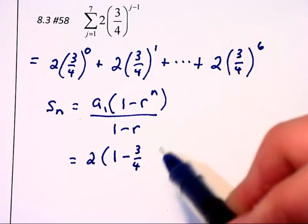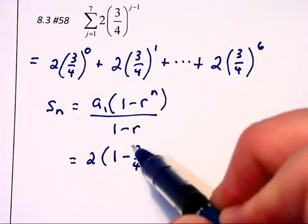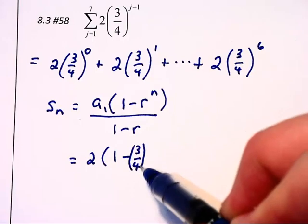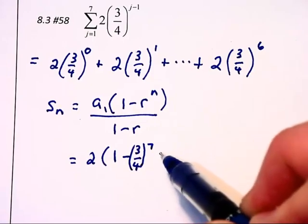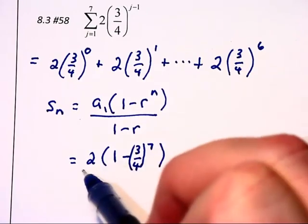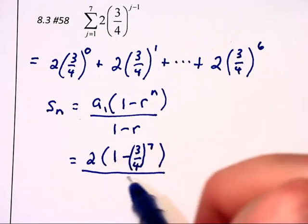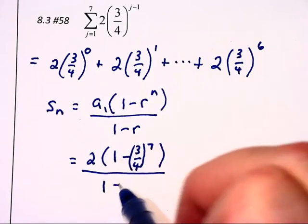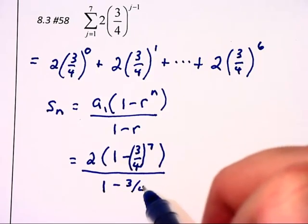Raised to the, in this case, 7th power. I think I need an inner parenthesis here, 7th power, close parenthesis again, all over 1 minus r, which is 1 minus 3 quarters.